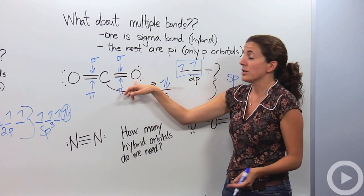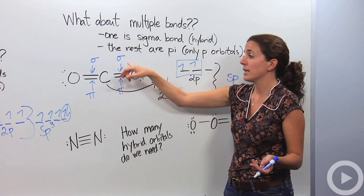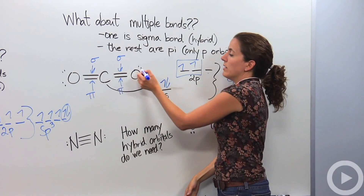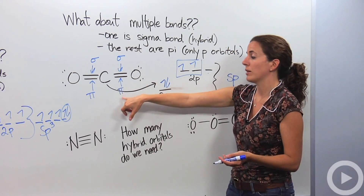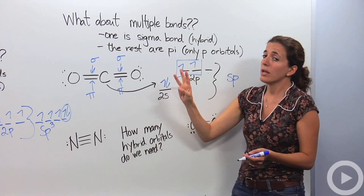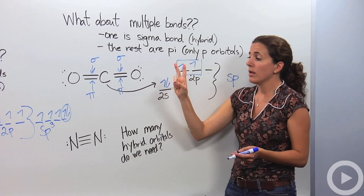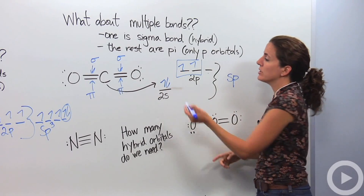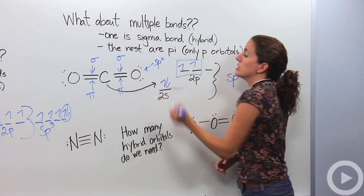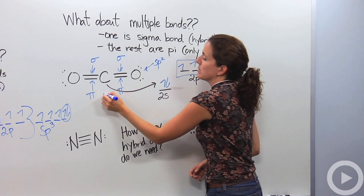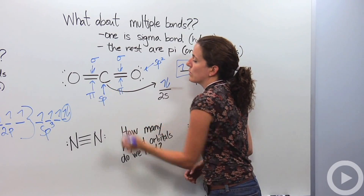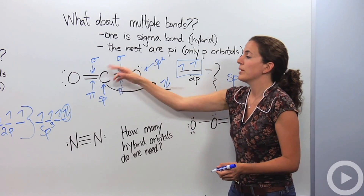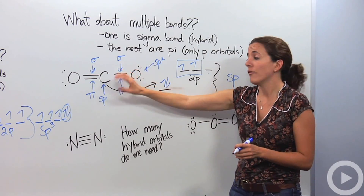Now let's look at the oxygen in CO₂. Oxygen also has a sigma bond, a pi bond, and lone pairs. The sigma bond and the lone pairs are going to be hybridized, but not the pi bond — we leave that alone. So we need three hybrid orbitals: one from s and two from p, making it sp2. It doesn't matter that carbon and oxygen have different orbital types — we just want the orbitals within each atom itself to be the same.